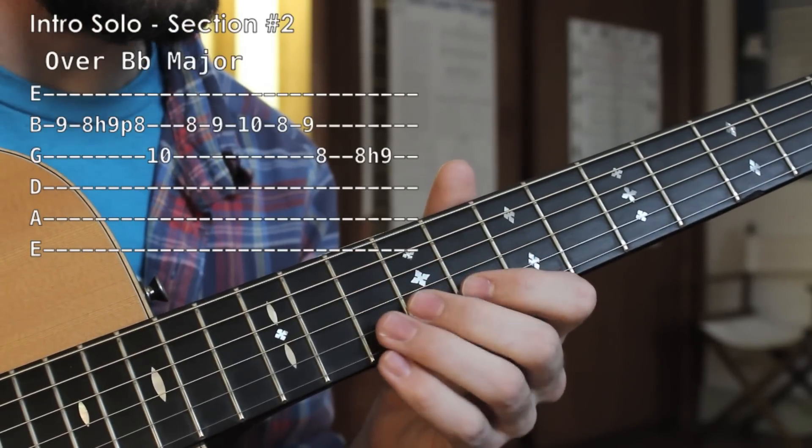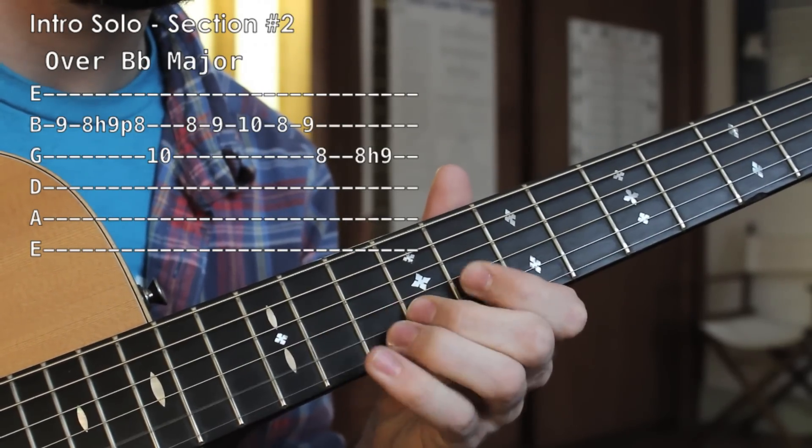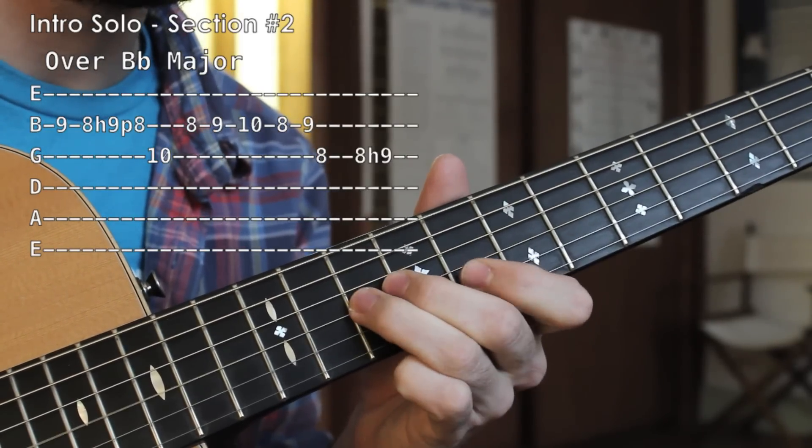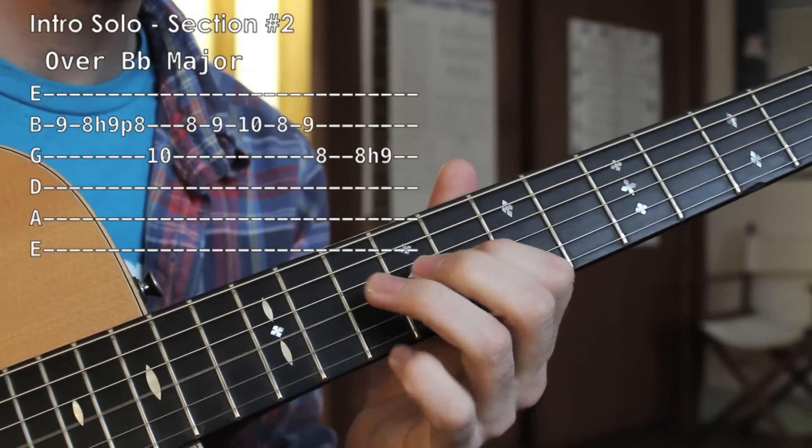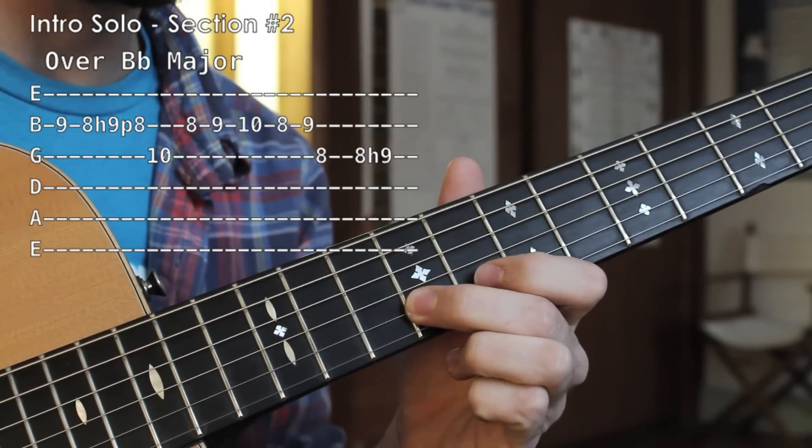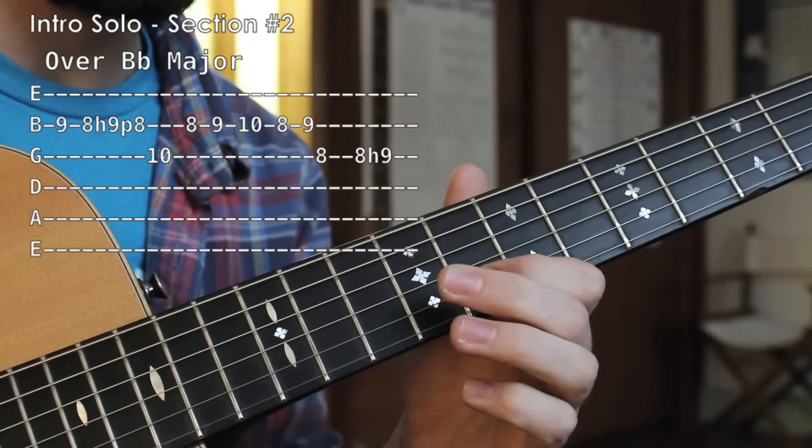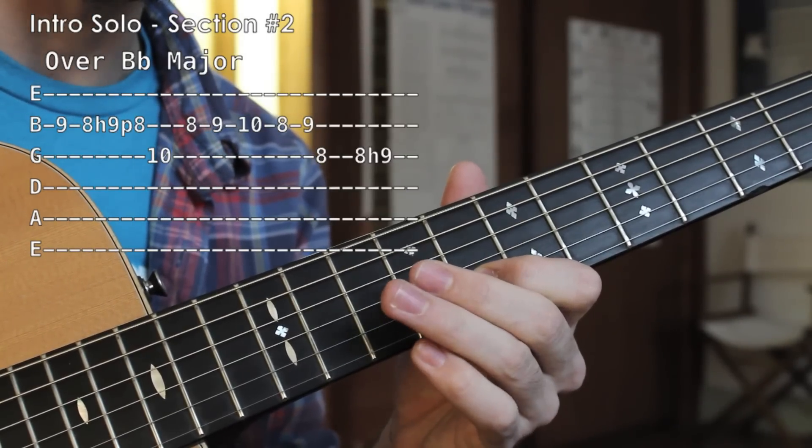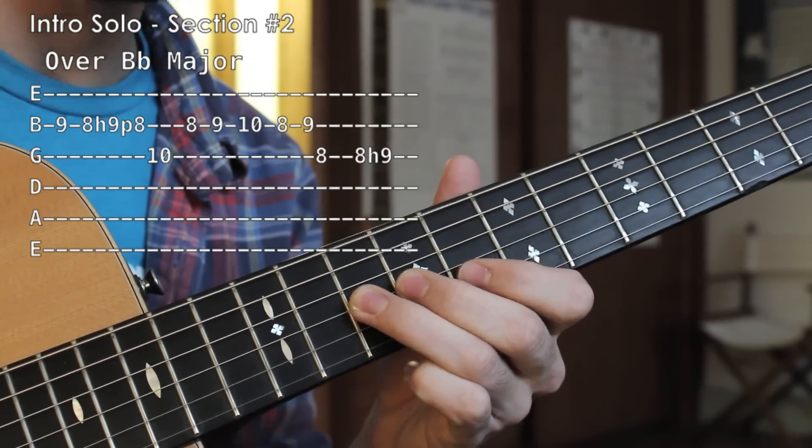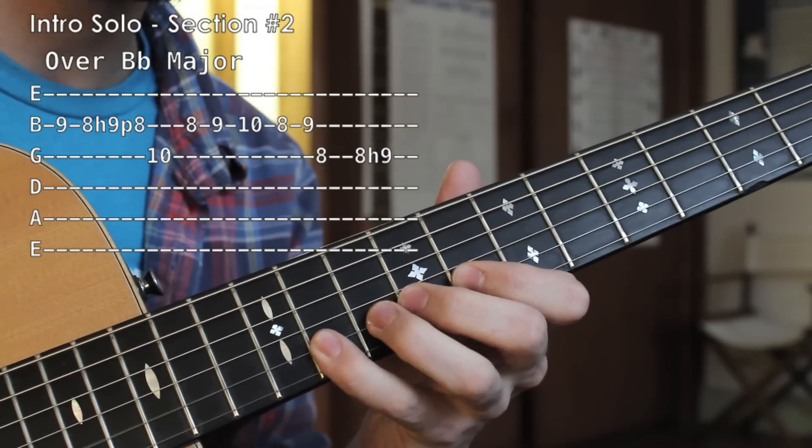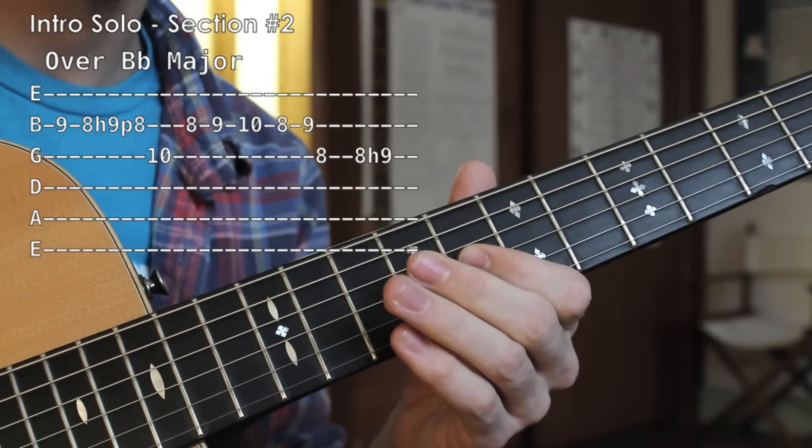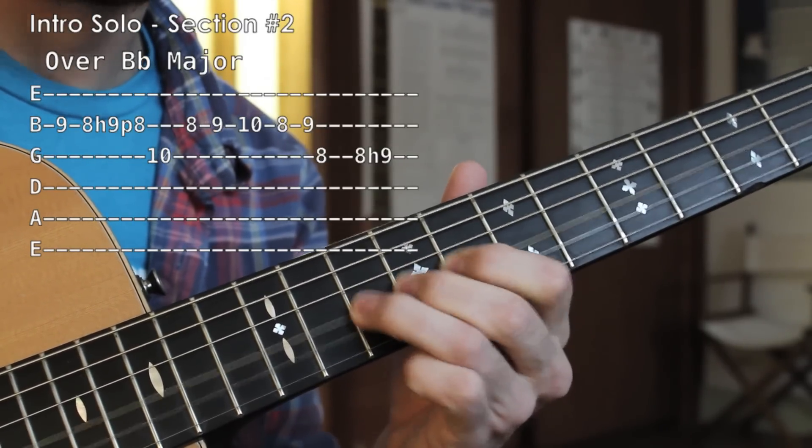Okay, moving on to section number two. It's going to sound like this. All right, it starts on here on the B string, I'm going to the ninth fret. Then I'm going, doing a little hammer on pull off action: eight, nine, eight to the tenth fret of the G. So far we have. Then I'm going eight on the B string, nine, ten, eight, nine. And then G string, eight. And then eight with a hammer on up to ten. A little vibrato there at the end.